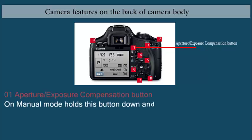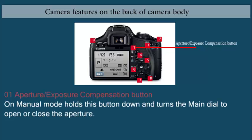Aperture or exposure compensation: On manual mode, hold this button down and turn the main dial to open or close the aperture.